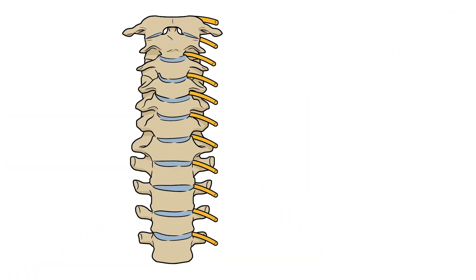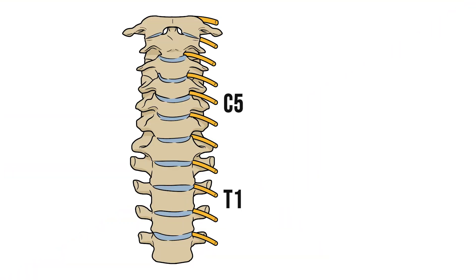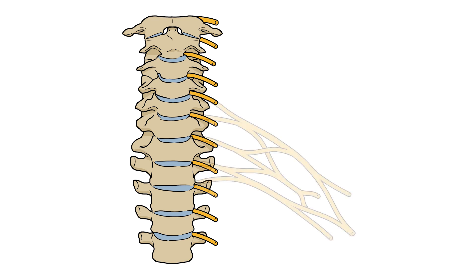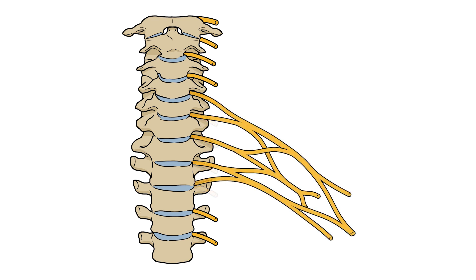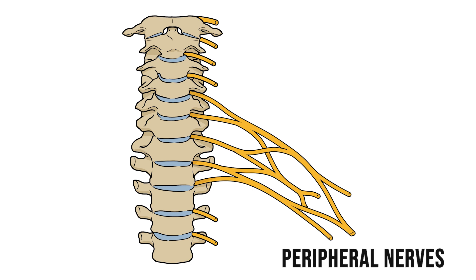The nerves to the upper limb primarily originate from nerve roots C5 to T1. These leave the spinal cord and form a plexus — the brachial plexus — before sending peripheral nerves out into the limb.